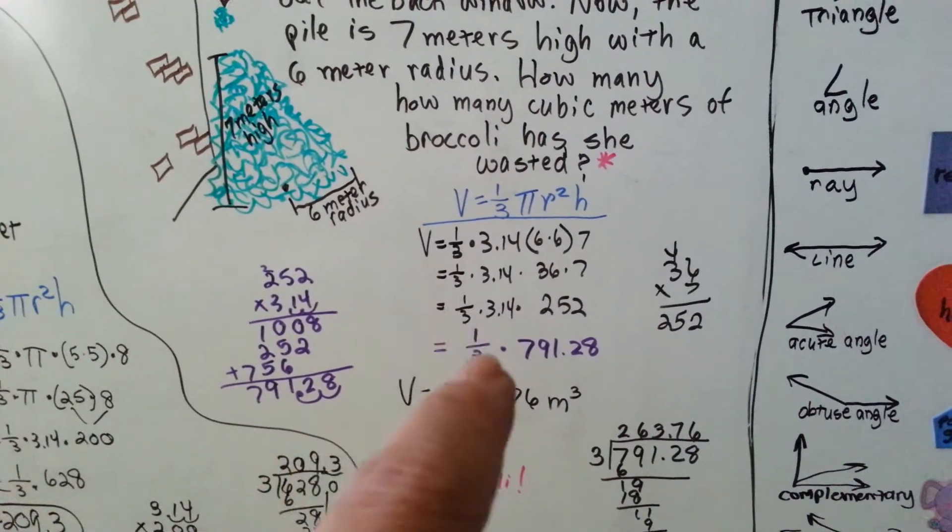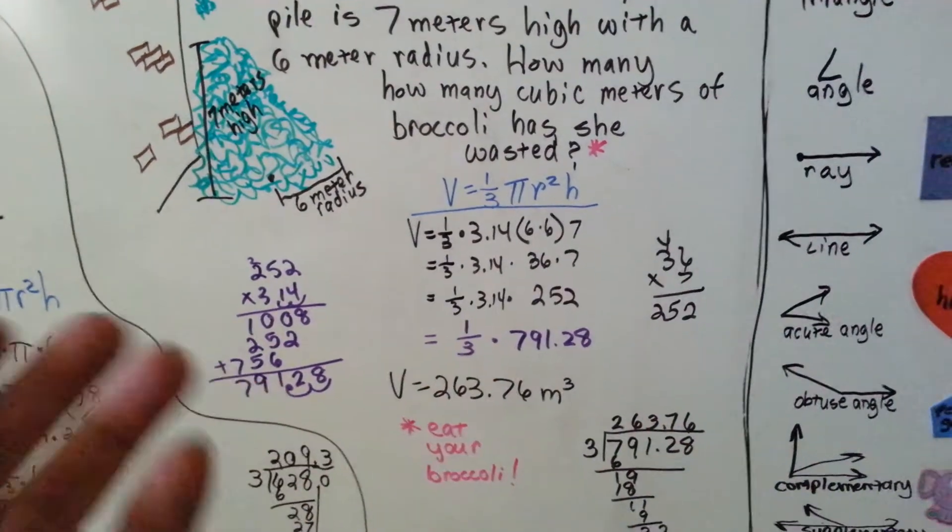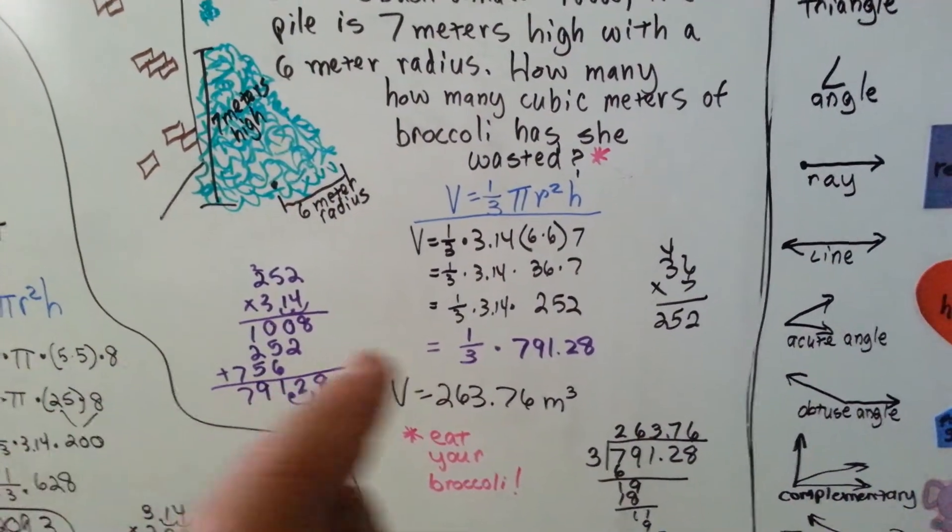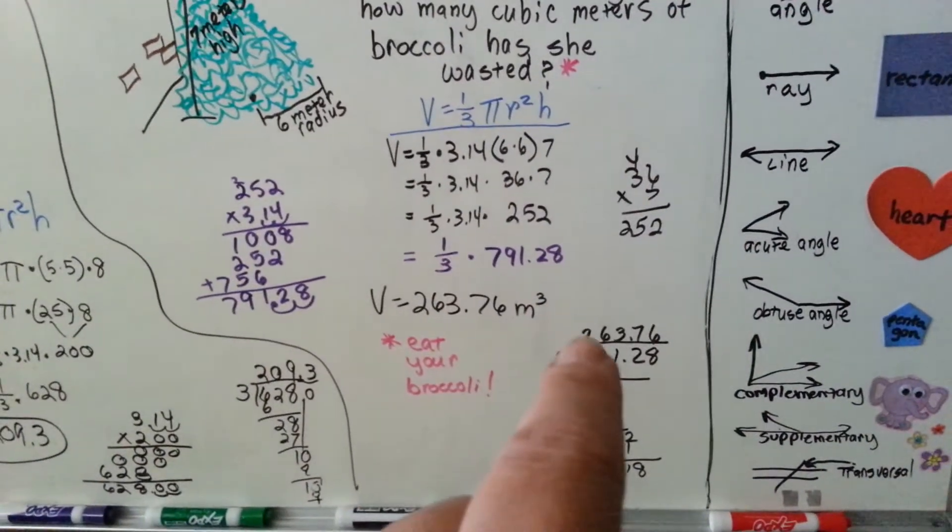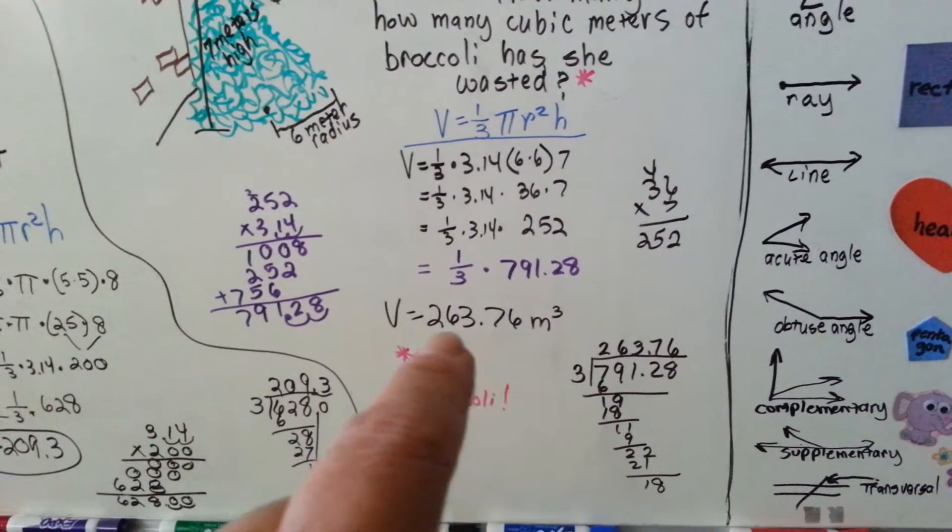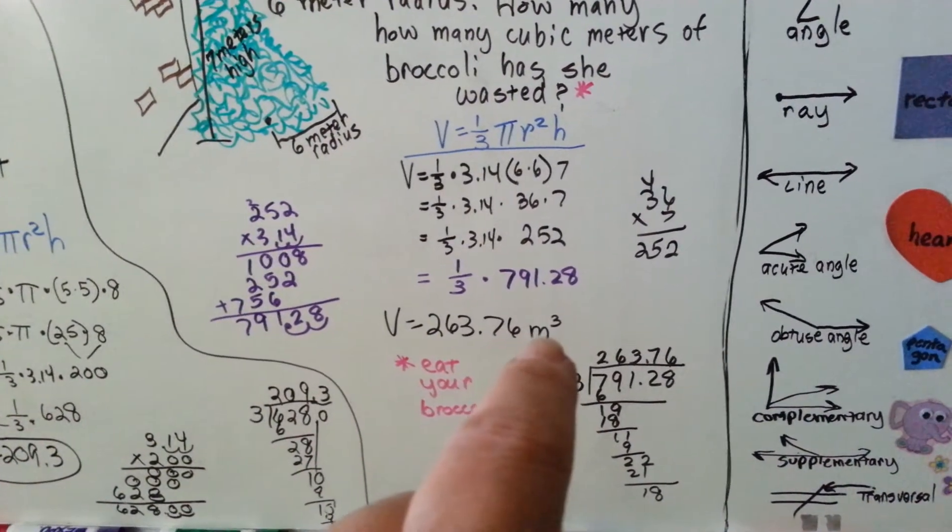Now, that needs to be multiplied by a third, or the opposite of multiplication is division. We could divide this number by 3. And I did. And I came up with 263.76 cubic meters.